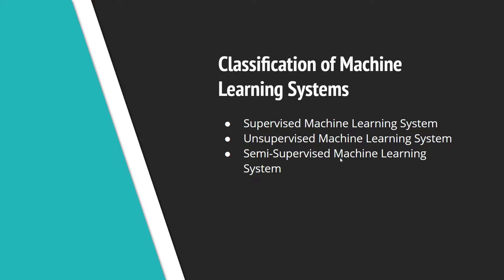The third type is the Semi-Supervised Machine Learning System. In this case, the data sent to the system contains both labeled and unlabeled information. A good example is the Google Photos app: if you upload 100 pictures and label one of them, that same label is applied to your other 100 photos as well. So to summarize, we can classify Machine Learning Systems into three types: Supervised, Unsupervised, and Semi-Supervised.